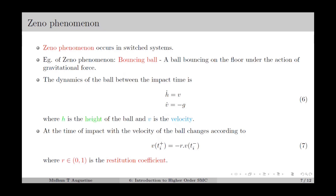We discuss the Zeno phenomenon with an example called the bouncing ball, which considers the dynamics of a ball bouncing on the floor under the action of gravitational force. Let h be the height of the ball and v be its velocity. The dynamics of the ball between the impact times is defined by equation number 6, where h dot equals v and v dot equals minus g, where g is the acceleration due to gravity. The minus sign appears since the acceleration due to gravity acts in the downward direction.